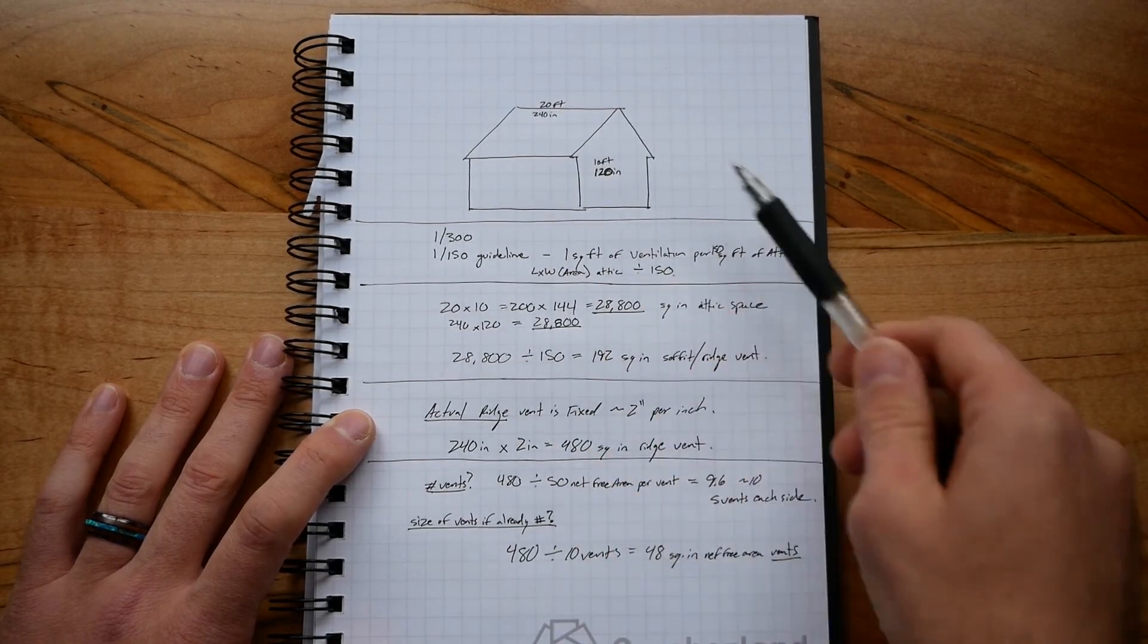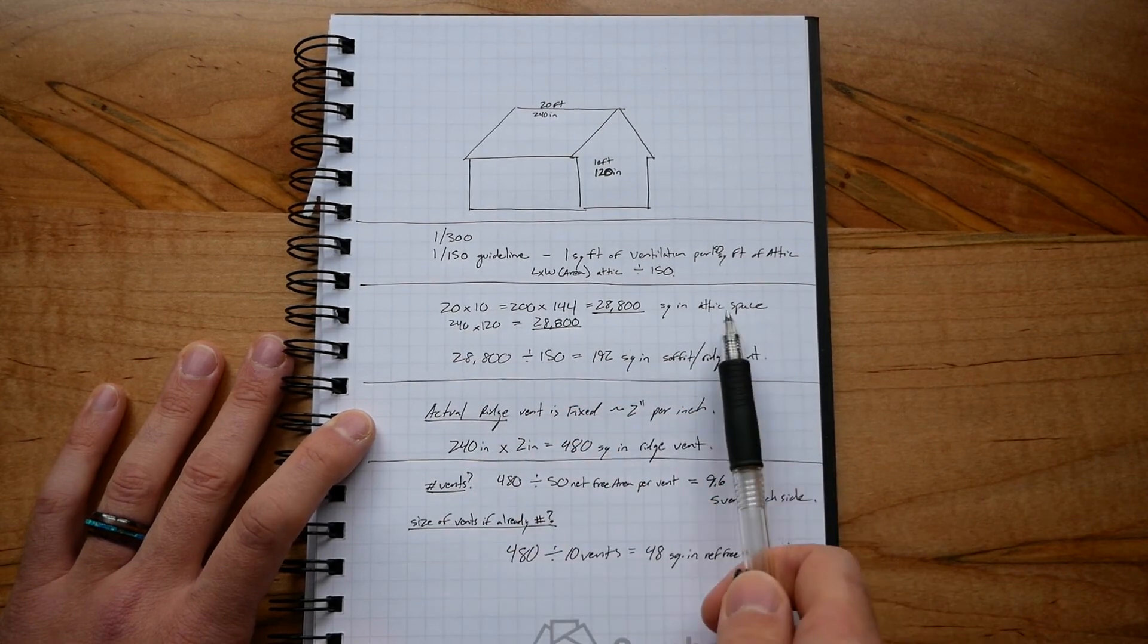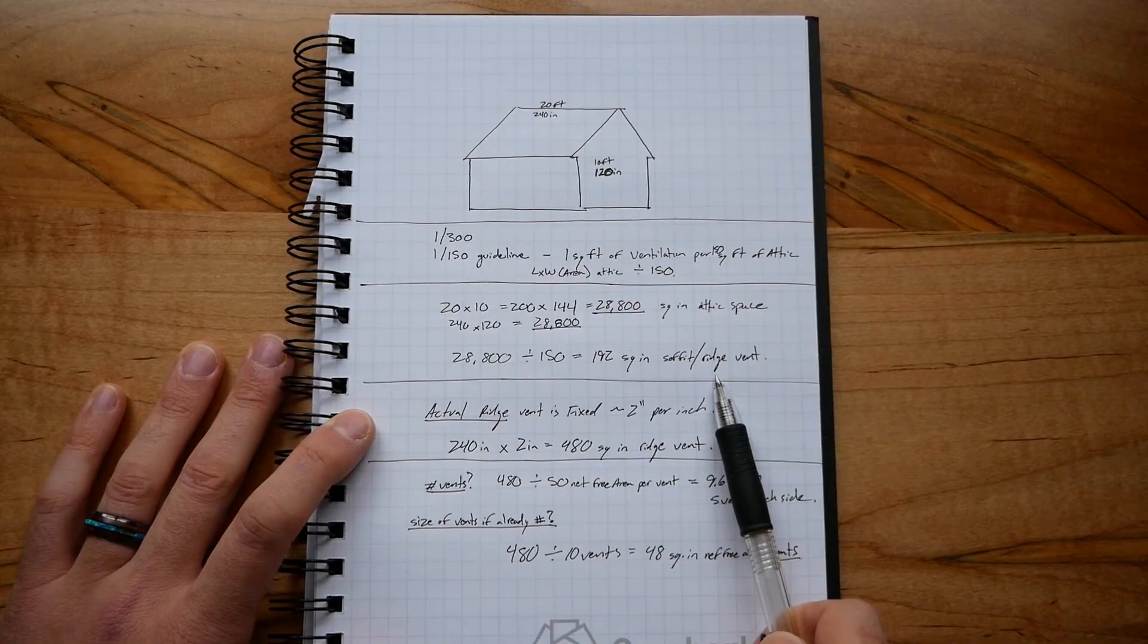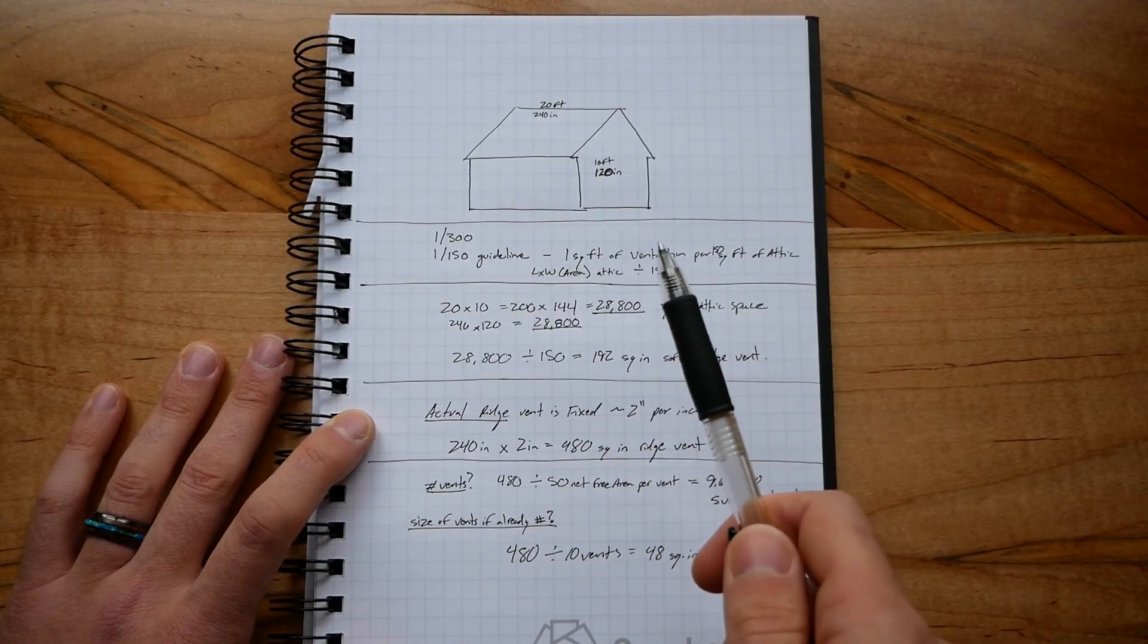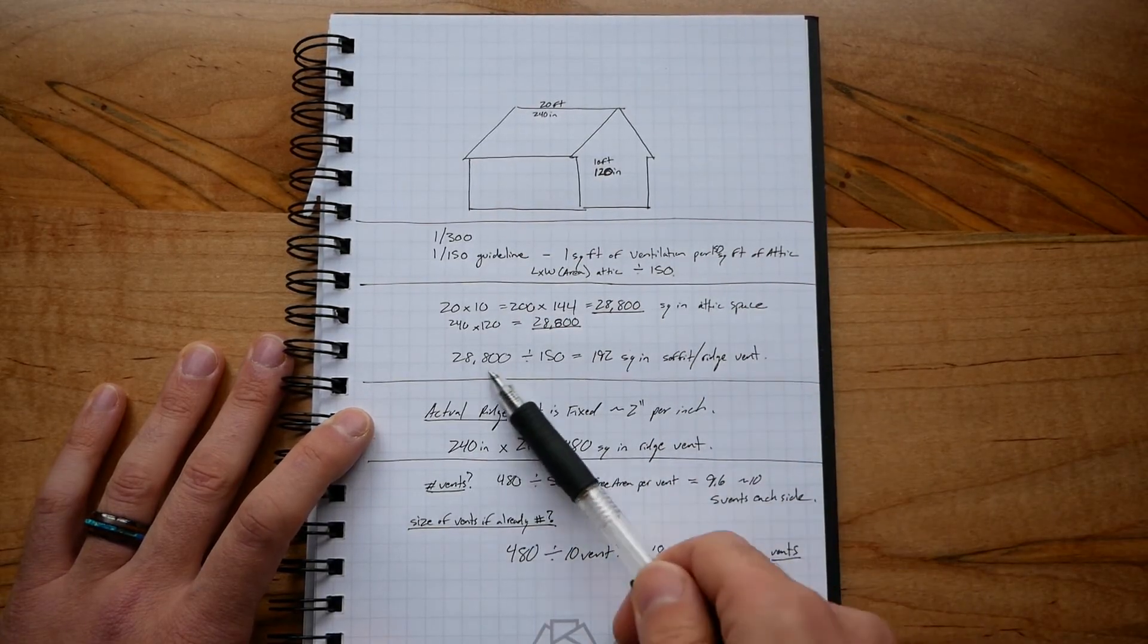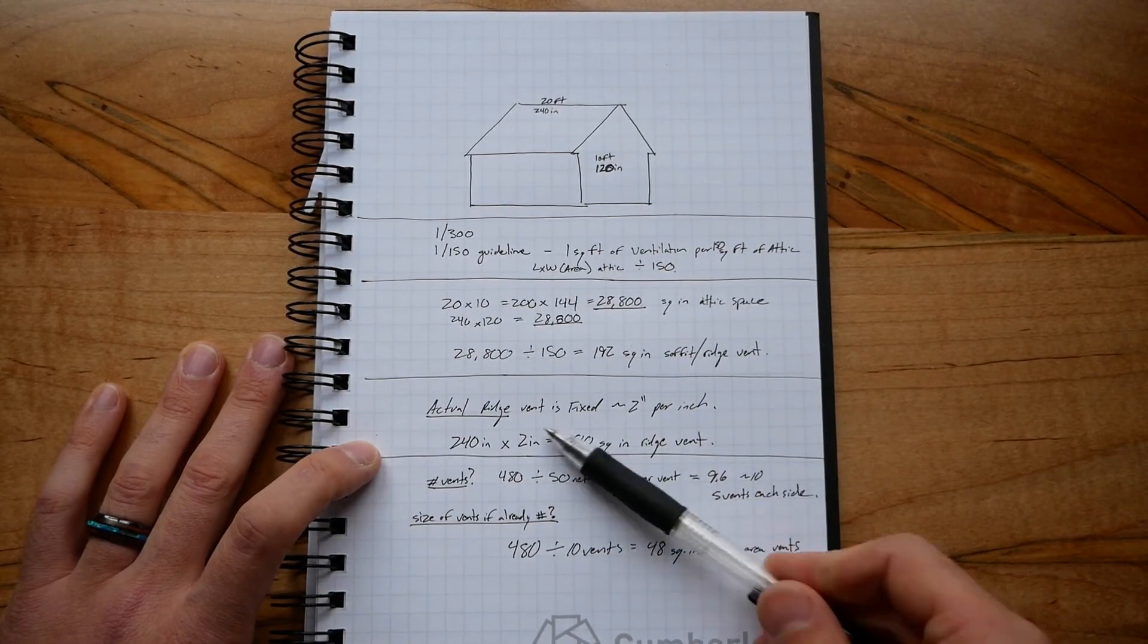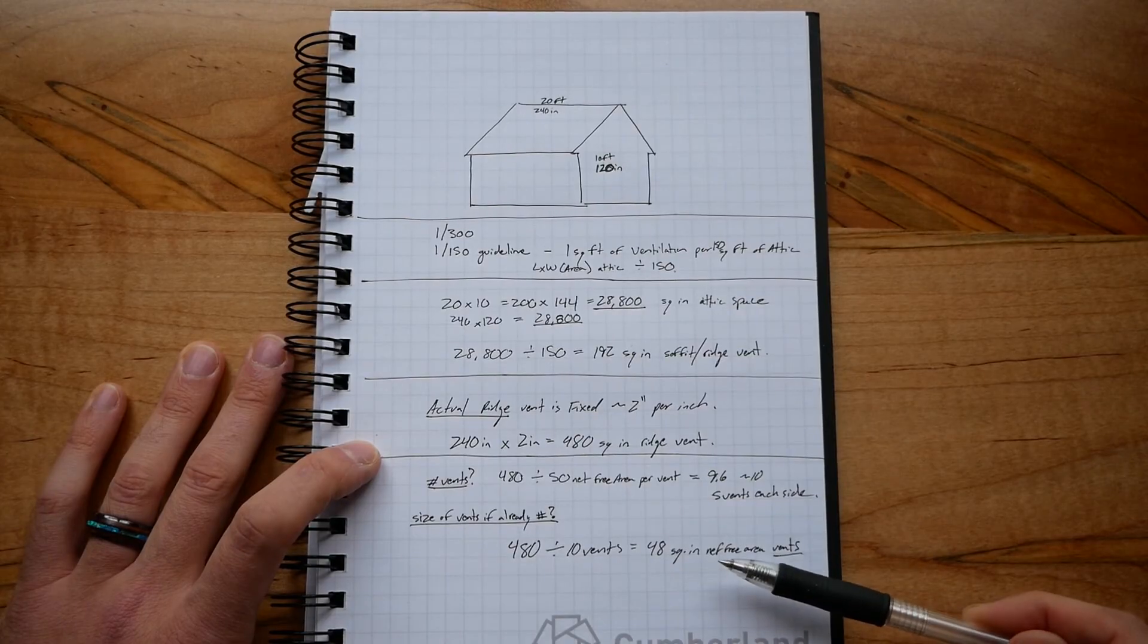So that breaks this down into: what is the guideline? What is the theoretical amount of ventilation space that would be both on the ridge and on the soffits? And then what is a more actual practical application of that area? And then how do we calculate either the number of vents or the size of vents that we would need?